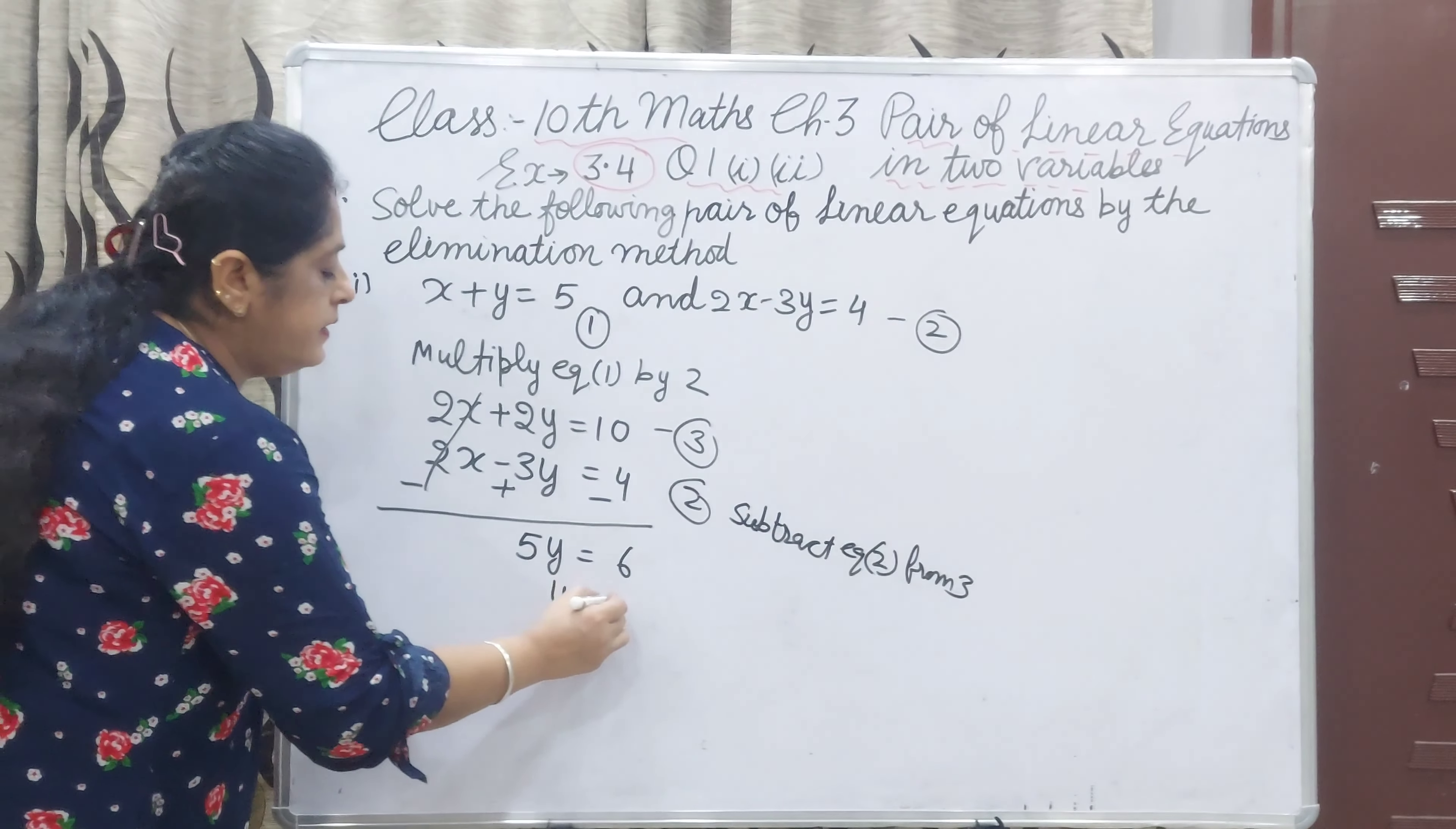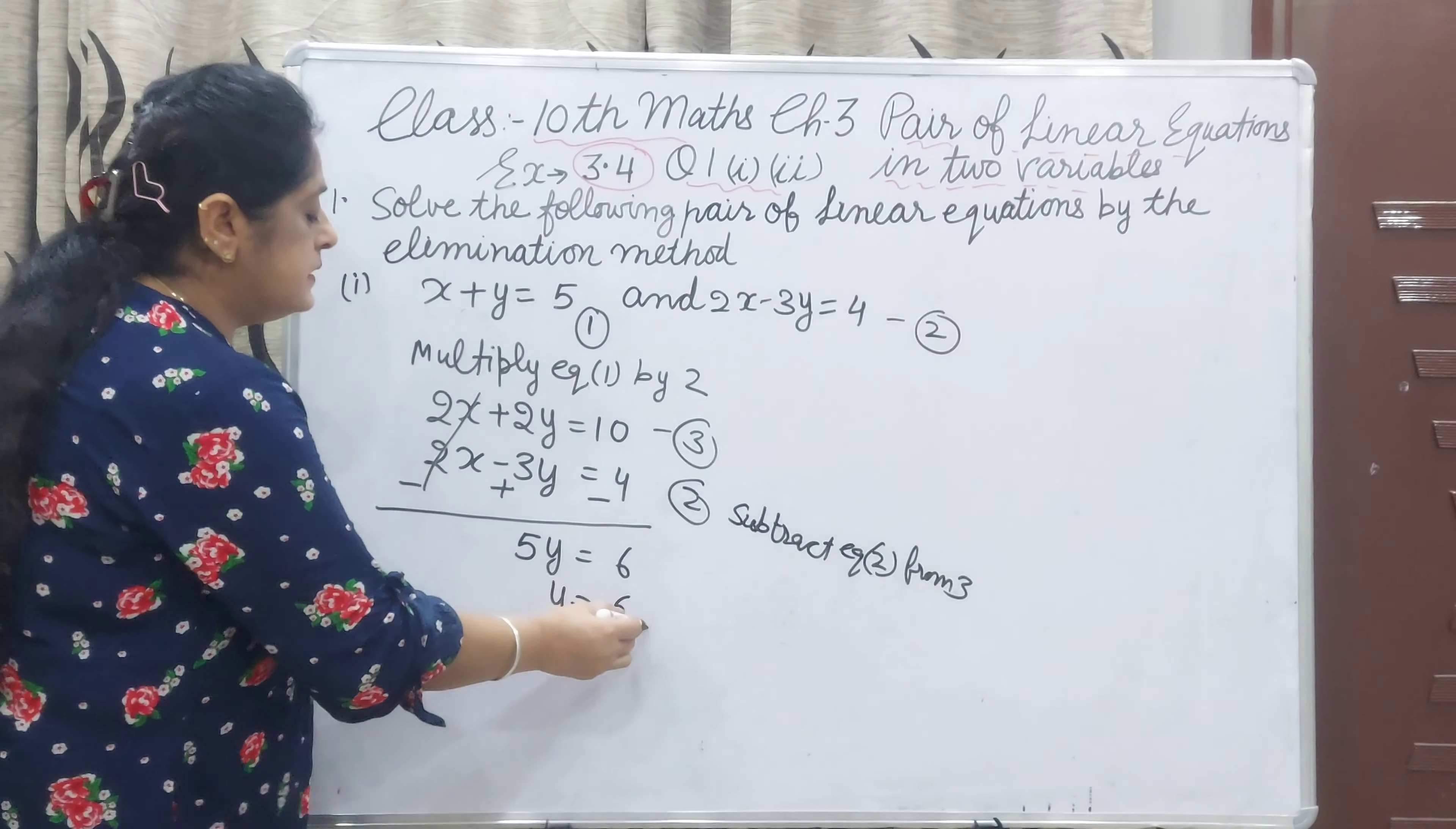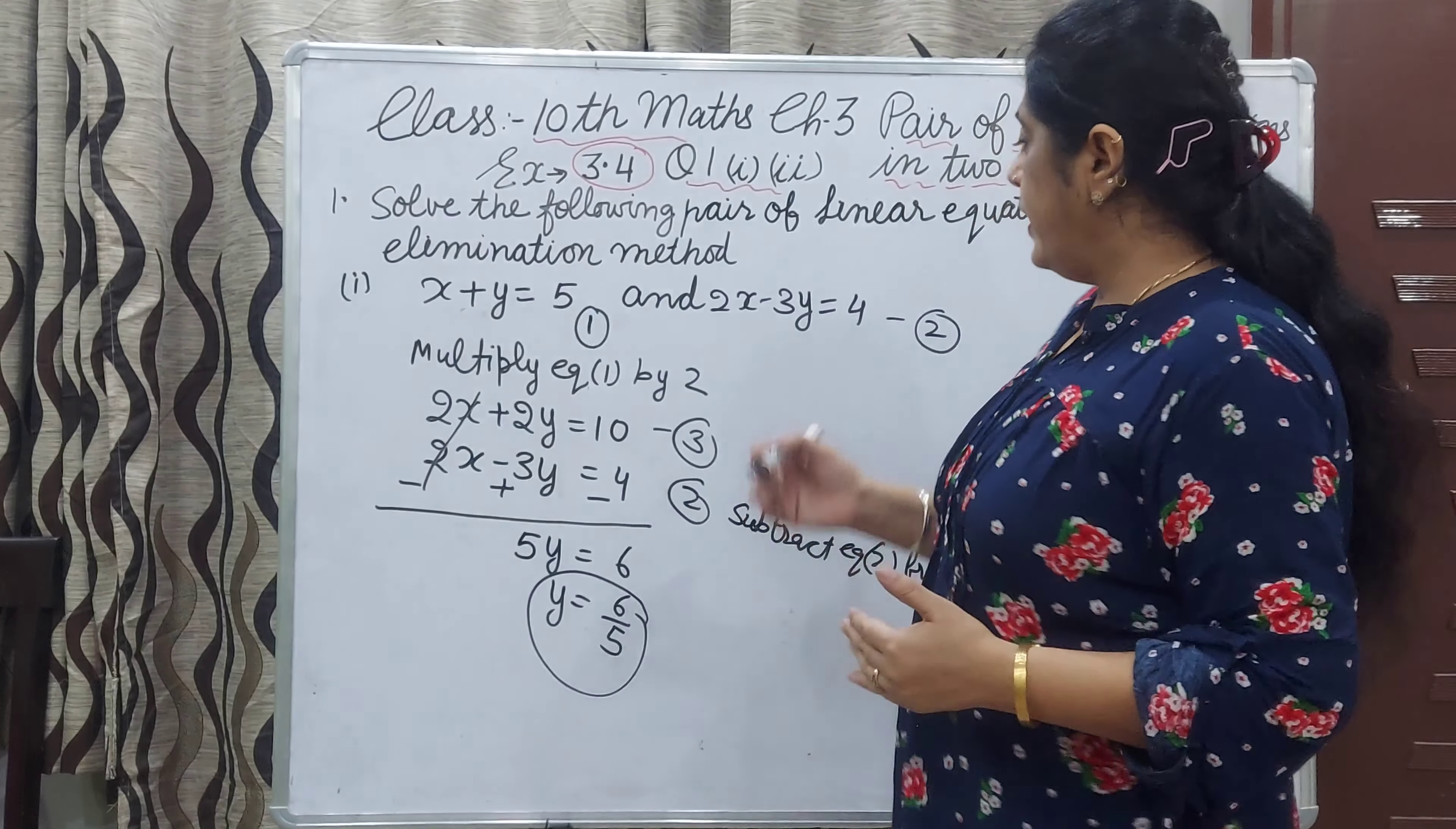Why is this? 5 is multiplied here, now it will be divided. Y value you get is 6 upon 5. Now in any equation you put the value of y, you will get the value of x.